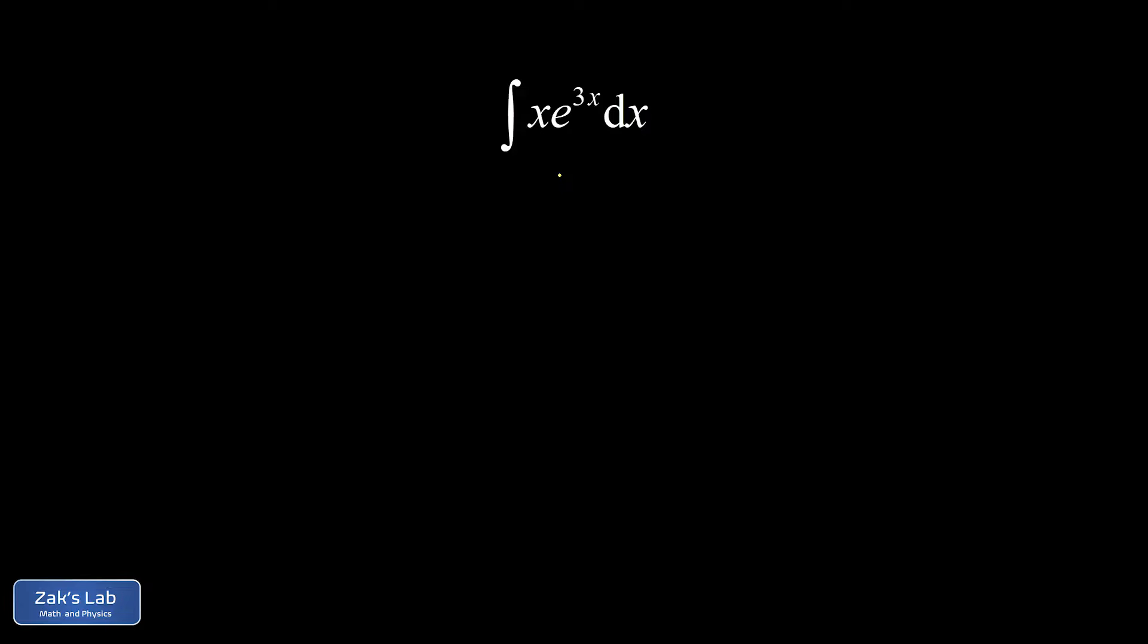So the main point of integration by parts is that we're integrating a product of two functions. We have x for our first function and e to the 3x for our second function, and we're going to pick one of these functions as the u for our integration by parts substitutions, and the other part of the integral will be called dv, and that includes the dx part.